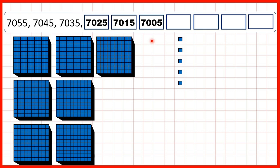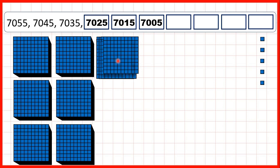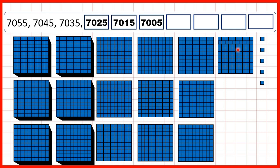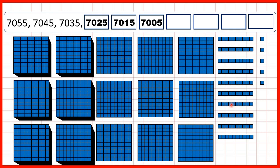But now we need to subtract ten and we don't have any tens to subtract. We also don't have any hundreds to exchange, so that means our thousands digit this time is going to need to change as well. Because to subtract ten, we first need to exchange one of our thousands for ten hundreds, and then we can exchange one of those hundreds for ten tens. So if we subtract one of those tens, we get 6,995.